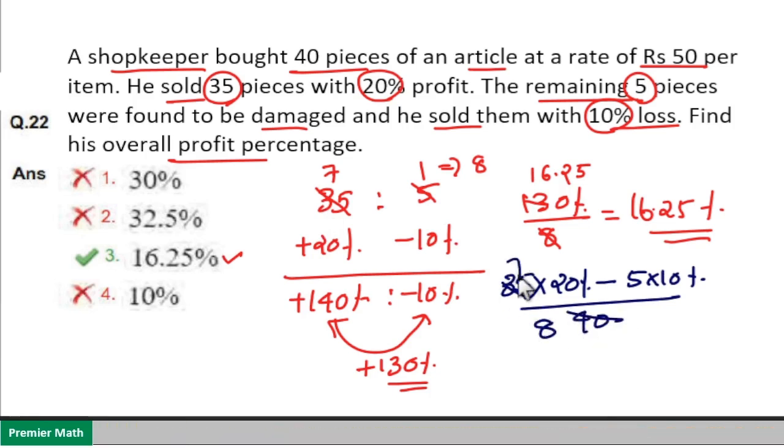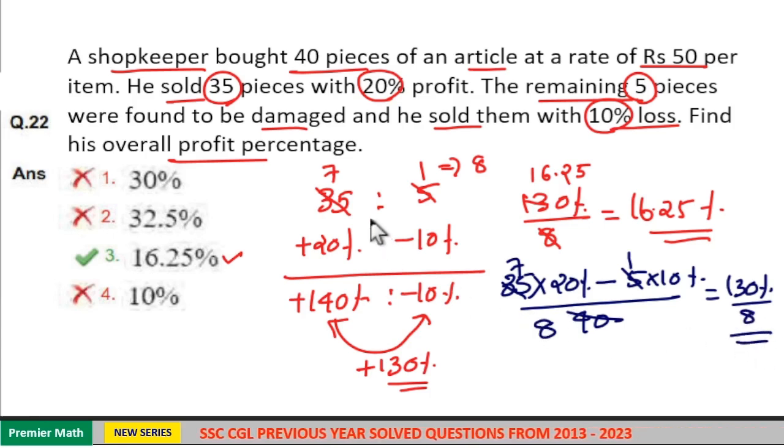5 goes 8 times in 40, 5 goes 7 times in 35, 5 goes 1 time in 5. Now 140 minus 10 is equal to 130 percentage divided by 8. So even if you take 35 and 5, it will cancel each other, the numerator and denominator.